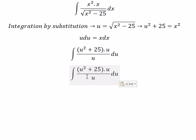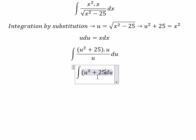u divided by u. Then we cancel. And now we just have u squared plus 25.